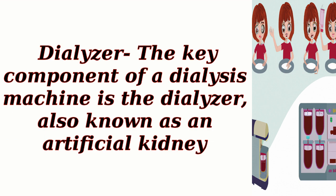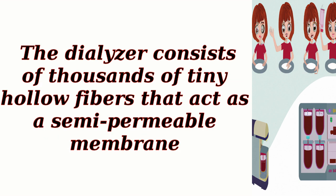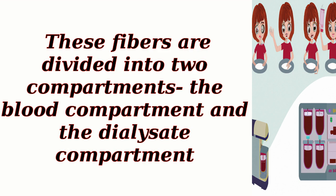Dialyzer: the key component of a dialysis machine is the dialyzer, also known as an artificial kidney. The dialyzer consists of thousands of tiny hollow fibers that act as a semi-permeable membrane. These fibers are divided into two compartments: the blood compartment and the dialysate compartment.